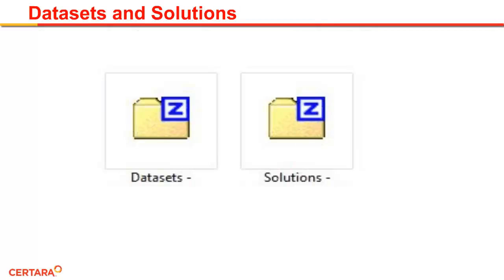There are two zip files that you will need for this course. These zip files are located in the file download area just below this video. You will need to download these files and extract them to a convenient location on your computer. Newer versions of Windows software allow you to browse the contents of zip files without extracting the individual files. However, Phoenix NLME cannot access zip files. Therefore, please be sure that you unzip the files once you have downloaded them to your computer.